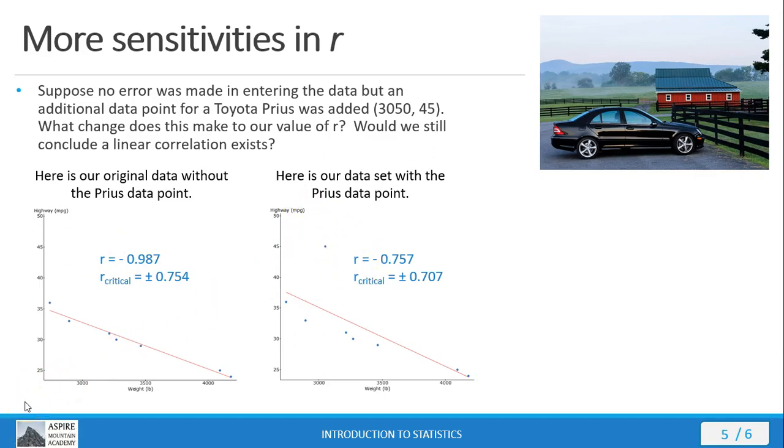So again we see the sensitivity in the linear correlation coefficient with respect to outliers and the need to make a scatter plot before doing anything else. In this case, a proper investigation would look at the data points and say this point is an outlier because coming from a hybrid car it's different from the other data points that come from traditional engine cars. We then have a possible case for excluding that data point from our analysis.